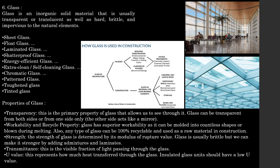Glass has superior workability as it can be molded into countless shapes. Strength: glass is usually brittle, but we can make it stronger by adding admixtures and laminate. Transmittance: this is the visible fraction of light passing through the glass. U-value: it represents how much heat is transferred through the glass.